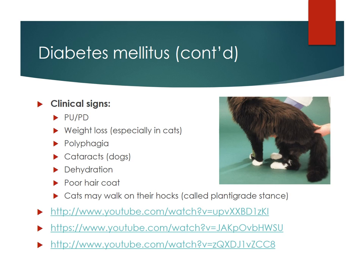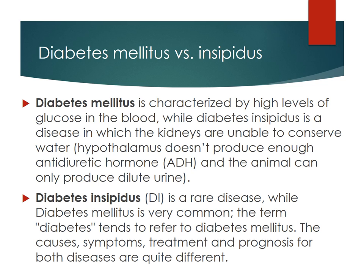Clinical signs of diabetes mellitus include PU/PD, which is a very common complaint. Weight loss is especially notable in cats — previously chubby cats that started losing an amazing amount of weight. They'll be polyphagic, ravenously eating, similar to hyperthyroidism — so you have to be careful because those clinical signs can be very similar. They'll be dehydrated with a very poor coat, and diabetic cats may walk on their hocks — the so-called 'hock walk' — bending their legs down and walking on their hocks, which is commonly seen in untreated diabetic cats.